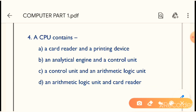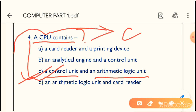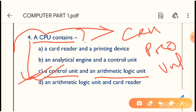Next question: A CPU contains what? A CPU contains a control unit and an arithmetic logic unit. Option C is the correct answer. Also remember: the full form of CPU is Central Processing Unit.